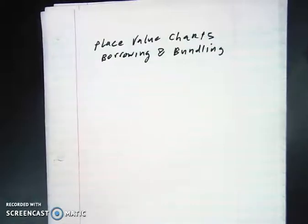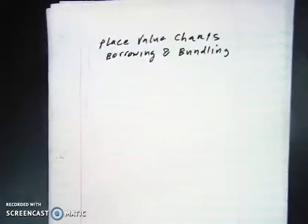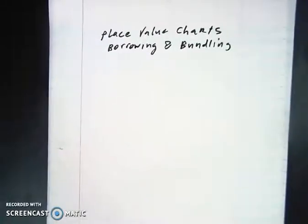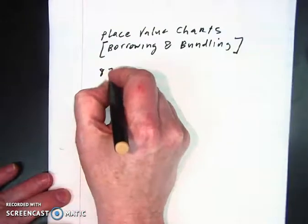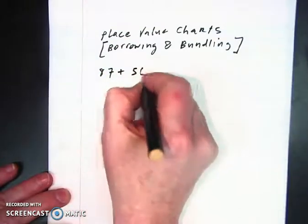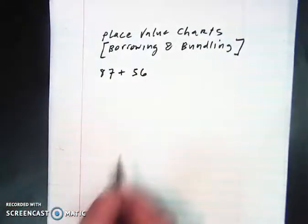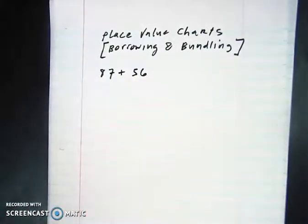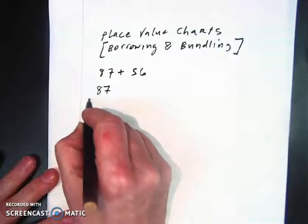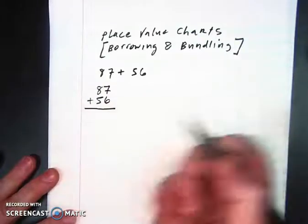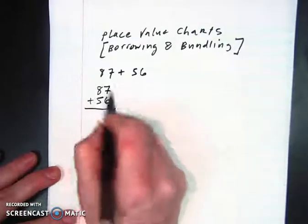Hi, this is Mrs. Fitzpatrick. I'm going to make a quick math video about place value charts and borrowing and bundling. We're going to start out with a problem that was on a recent test. So this is always good to know in advance what you're going to be tested on. The direction said to do the problem vertically and then solve using the place value method. Most of us know how to set up the problem vertically.